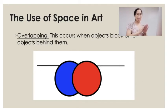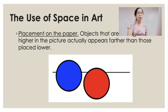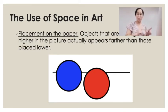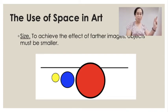Let's discover the different uses of space. First, we have overlapping — in this image, the red overlaps the blue. Overlapping occurs when objects block other objects behind them. We also have placement on the paper: objects arranged higher in the picture appear farther than those placed lower. Another consideration is size — to achieve the effect of distance, objects must appear smaller when farther and larger when nearer.